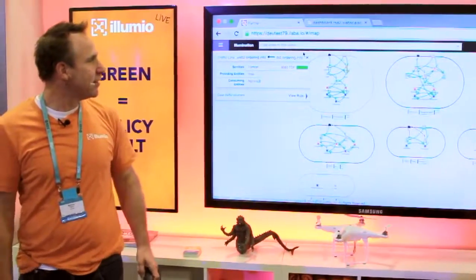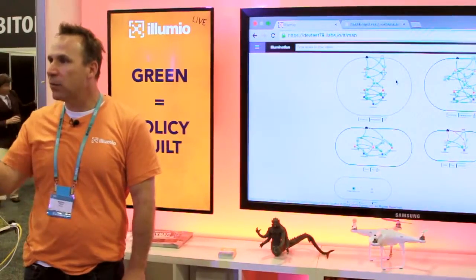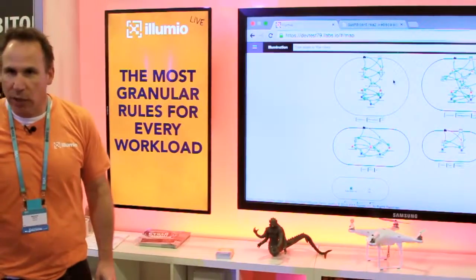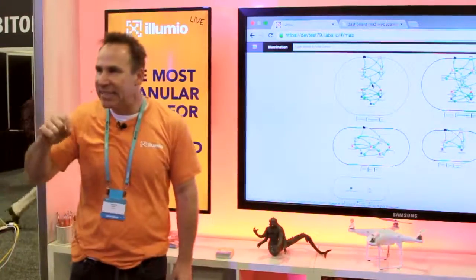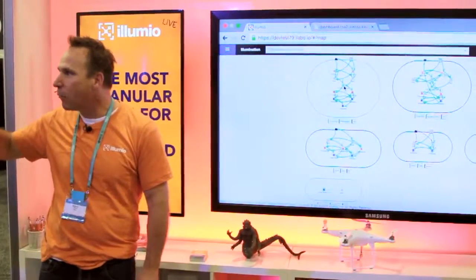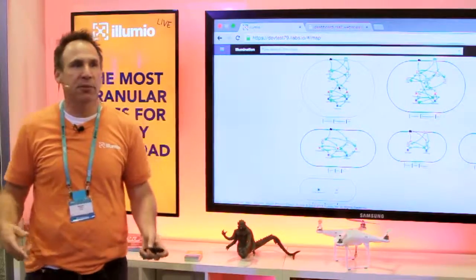And what's going to happen is that line is going to turn from red to green. The policy compute engine just figured out what the optimal security was and wrote a very granular security policy down to that host. And it did it dynamically. And it did it without, we didn't describe the network. We just described the interactions that we wanted to happen. And we computed the optimal security for that.